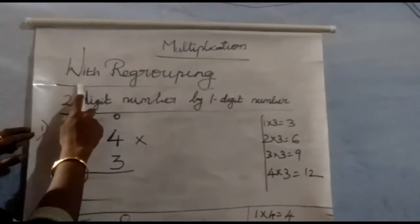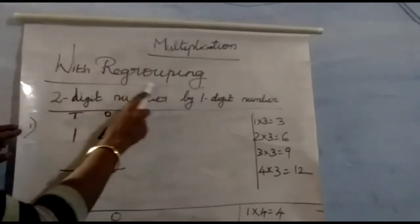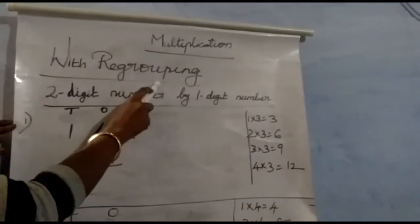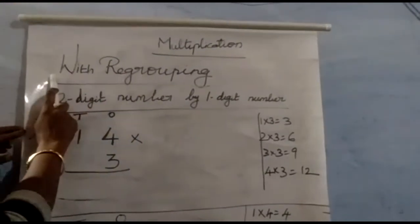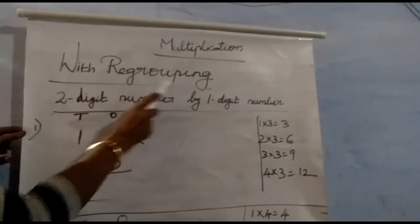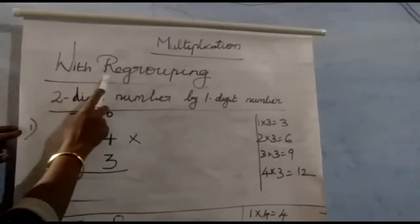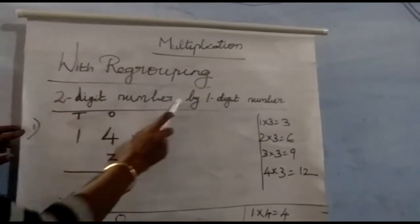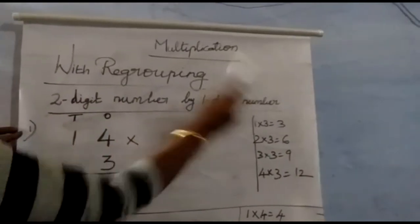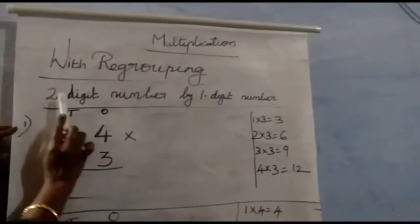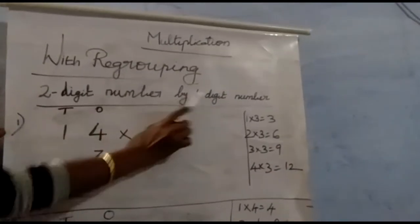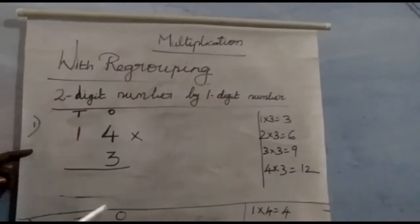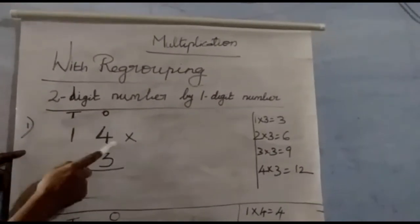Today we are going to see multiplication with regrouping. Last class we saw without regrouping. Now we are going to see with regrouping — two-digit number by one-digit number.